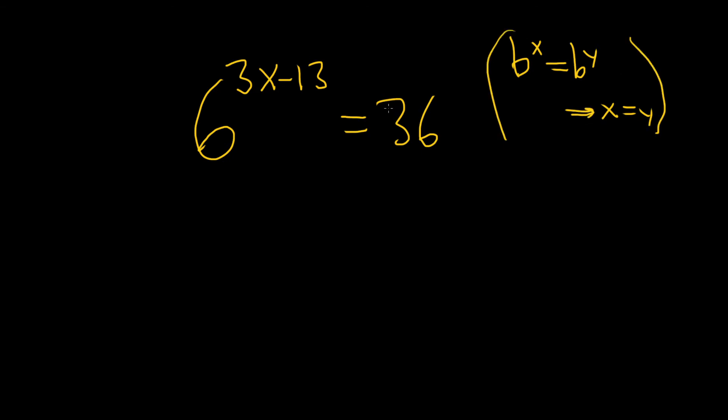The reason we want to use 6 here is because 36 can be written as 6 squared. So let's go ahead and do that. We'll keep the left-hand side the same, 6 to the 3x minus 13. And the 36, we'll write that as 6 to the second power.